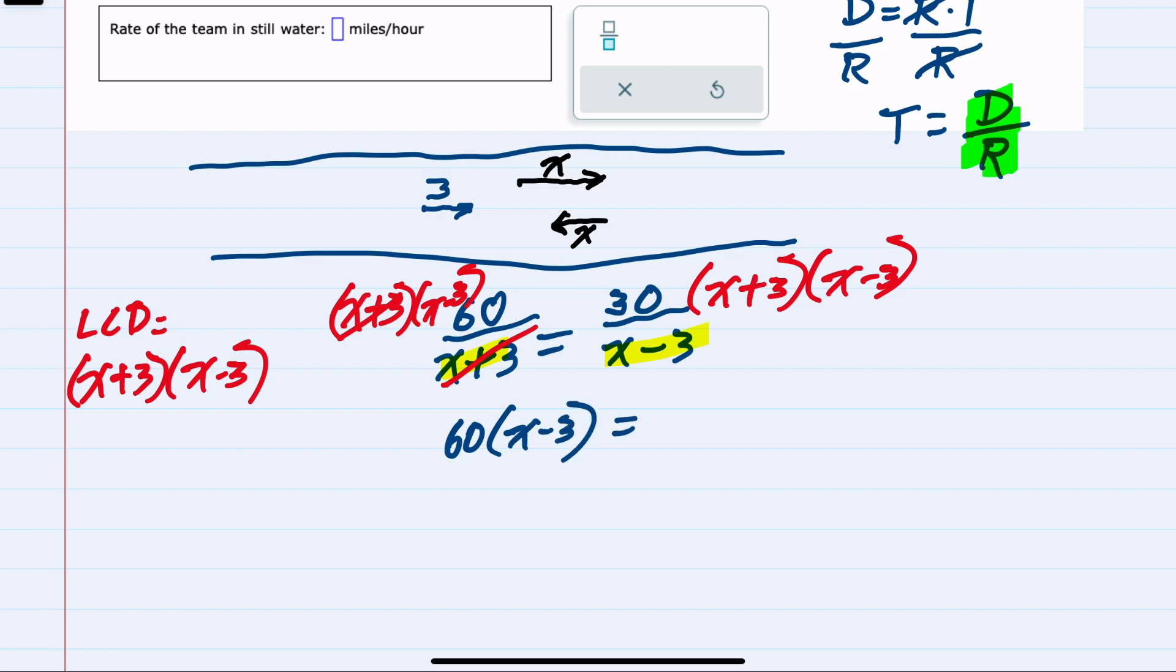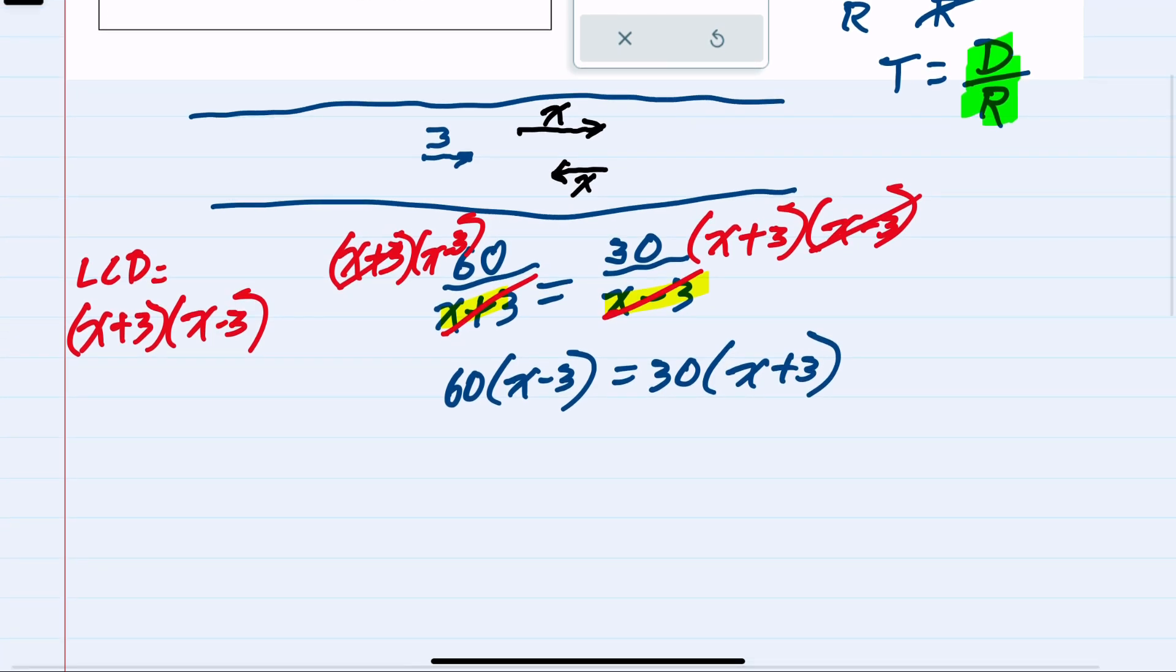And then on the right-hand side, the denominator again cancels, leaving me with 30 times X plus 3. So from here, we can distribute to simplify.